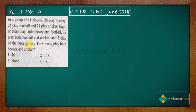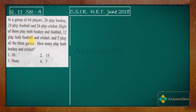In a group of 44 players, 26 play hockey, 24 play football, 24 play cricket, 8 of them play both hockey and football, 12 play both football and cricket, and 5 play all three games. How many play both hockey and cricket? This is a set theory problem and we will solve it using a Venn diagram.